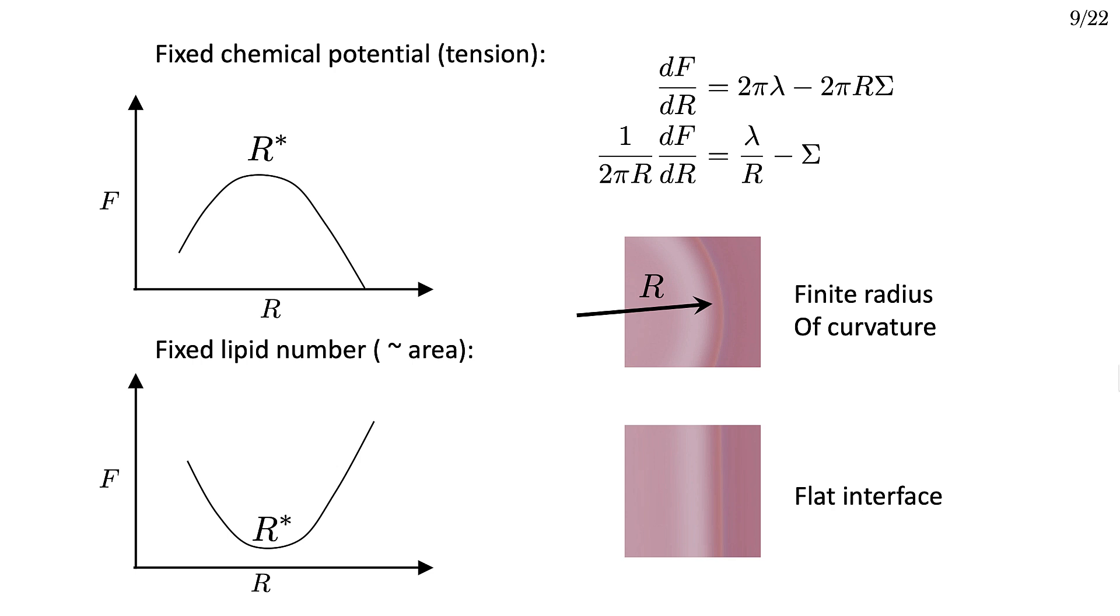If we move to the NVT ensemble, then to a first approximation, fixing the lipid number fixes the membrane area. But to understand the behaviour of the diaphragm, it's useful to use a slightly higher order approximation. I won't write it out explicitly, but you can think of it like this. If the area was fixed, it would be impossible for an HD or pore to change size, for reasons I explained on slide 7.